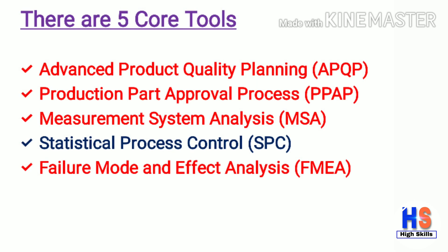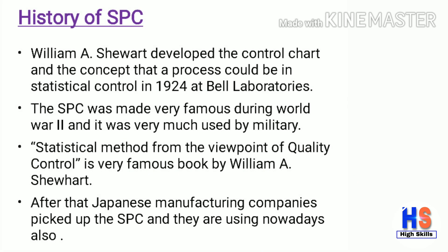As we know, there are five core tools in IATF 16949:2016, which are: Advanced Product Quality Planning (APQP), Production Part Approval Process (PPAP), Measurement System Analysis (MSA), Statistical Process Control (SPC), and Failure Mode and Effect Analysis (FMEA). In this video we will learn about SPC — statistical process control.